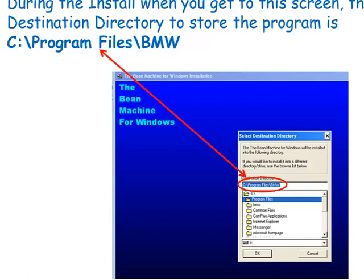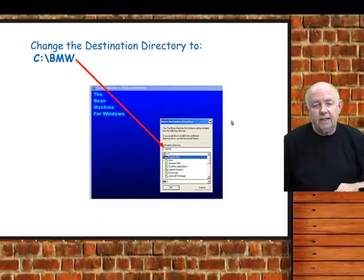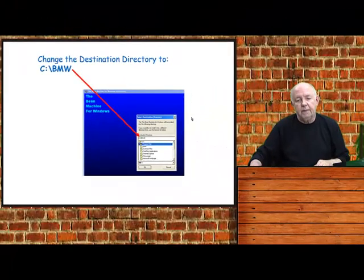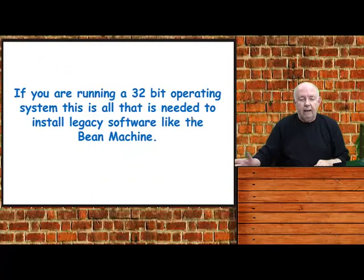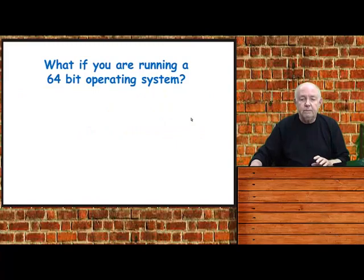The newer operating systems with multiple users really change the way that the program files directory works, so the way around it is just get rid of 'program files' and change the destination directory — in our case, to C:\BMW. After you've made that change, if you're running a 32-bit operating system, it should run for you, and the Bean Machine does.